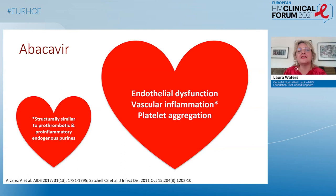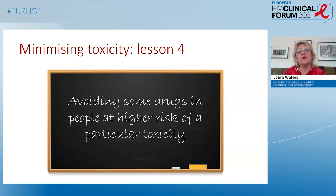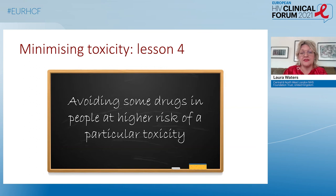Moving back to cardiovascular risk: abacavir is the NRTI most associated with an increase in cardiovascular risk. A number of mechanisms have emerged — endothelial dysfunction, vascular inflammation, and an impact on platelet aggregation — because abacavir mimics endogenous purines, which can be pro-thrombotic and pro-inflammatory. This leads to lesson four: avoiding certain drugs in people at higher risk of a particular toxicity. As we learn more about toxicity profiles, we can tailor regimens accordingly.